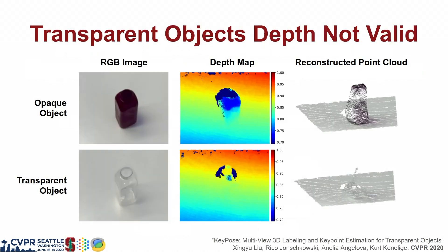Welcome to our paper. Here are the depth maps and reconstructed 3D point clouds of opaque and transparent objects in the same shape. We noticed that an RGBD sensor cannot return valid depth values for transparent objects.